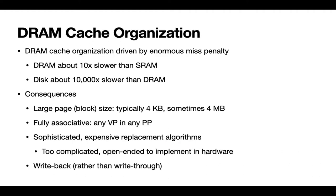Let's think about the implications of using DRAM as a cache. DRAM is about a factor of 10 slower than the SRAM in the CPU chip, and the disk itself is somewhere in the neighborhood of 10,000 times slower than DRAM. So if we're using DRAM as a cache, we have to recognize there is a huge miss penalty. If the processor issues a request for a virtual address and the physical memory associated with it hasn't been brought into DRAM yet, there's going to be a very long delay while the virtual memory system goes out to disk, fetches the entire page in, stores it into physical memory, and updates the mapping between virtual and physical addresses.